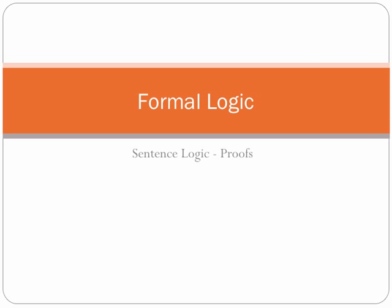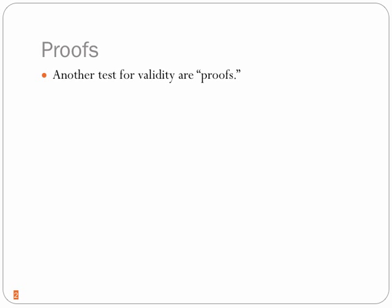Today we're going to continue our discussion of formal logic — specifically sentence logic, which is a type of formal logic — and we're going to focus on something called proofs. Another test for validity are proofs. We learned one way to show that arguments are invalid, which was short truth tables. But you can use a long truth table to show an argument is valid. The method you're going to use to show an argument is valid is proofs.